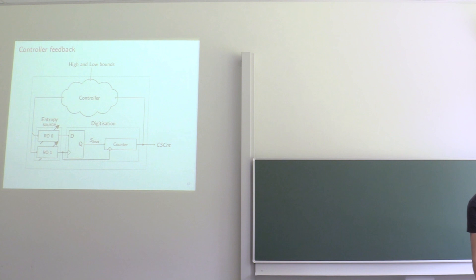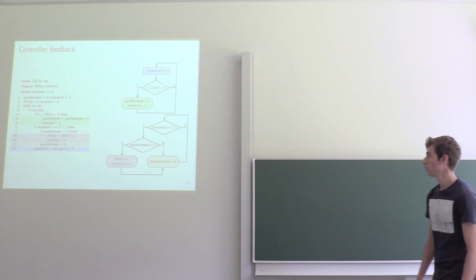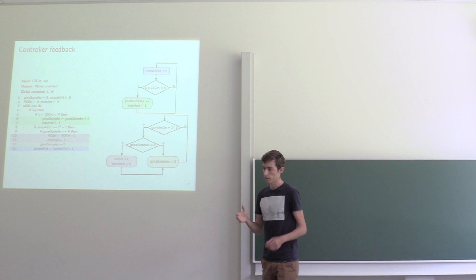The controller algorithm is quite simple. You just monitor some counter outputs. Every time you find one that is within the required range given by the stochastic model, you increment another counter.